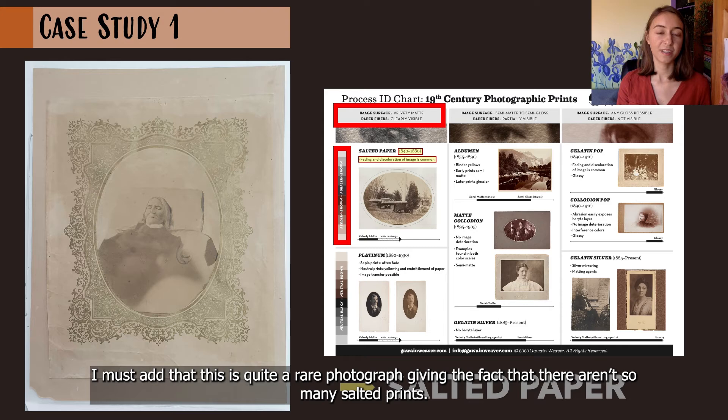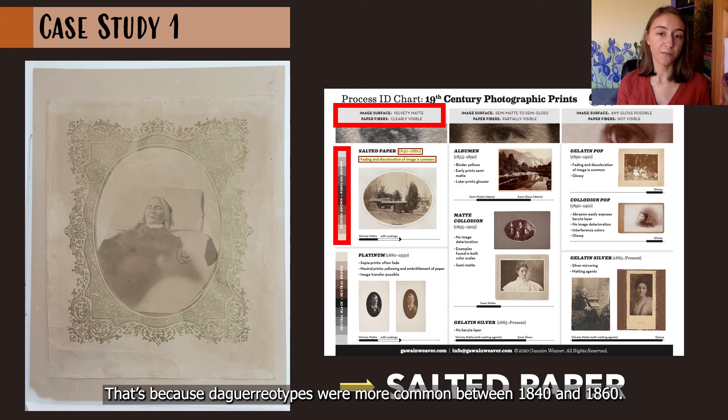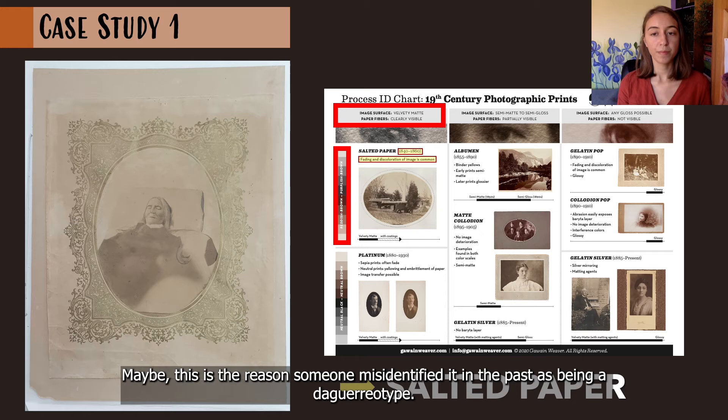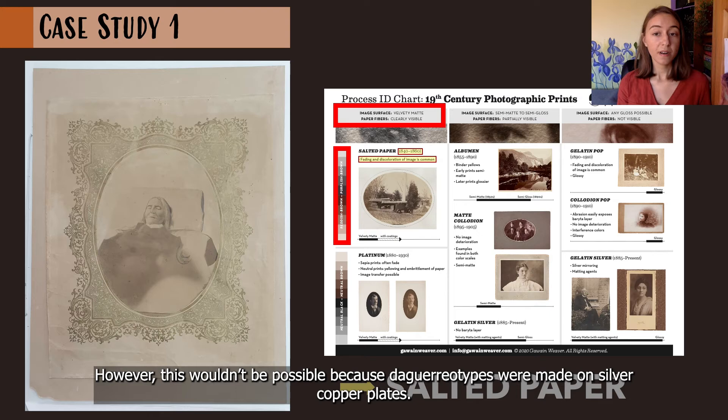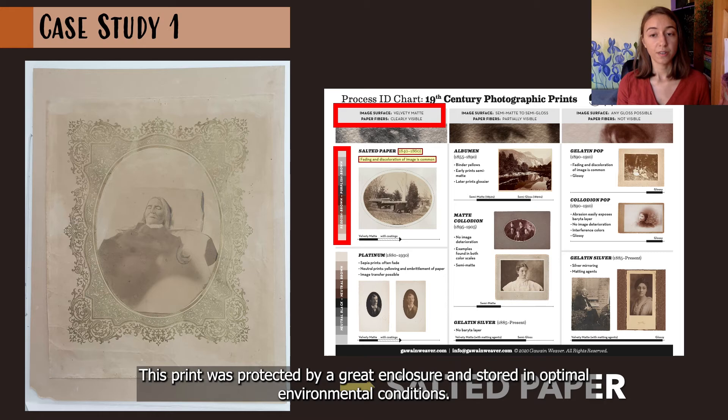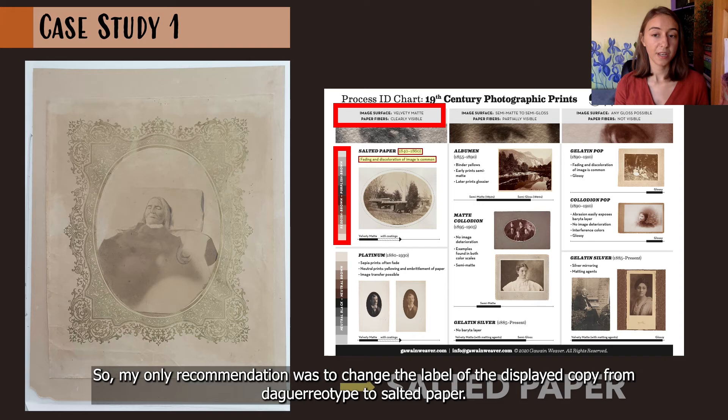All these characteristics can only indicate one process: salted paper. This is quite a rare photograph given that there aren't so many salted prints, because daguerreotypes were more common between 1840 and 1860. Perhaps this is why someone misidentified it in the past as a daguerreotype. However, that wouldn't be possible because daguerreotypes were made on silver-copper plates. This print was protected by a good enclosure and stored in optimal environmental conditions, so my only recommendation was to change the label of the displayed copy from daguerreotype to salted paper.